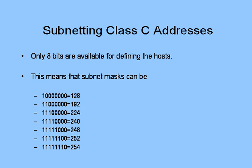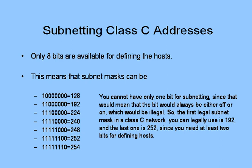Is that what you came up with? You cannot have only one bit for subnetting, since that bit would always be either off or on, which would be illegal. So the first legal subnet mask in a Class C network you can legally use is 192. And the last one you can legally use is 252, because you've got to have at least two bits to define hosts. If you only have one bit, 2 to the power of zero is zero — no bit, no host. So I've got to have at least two bits to work with.